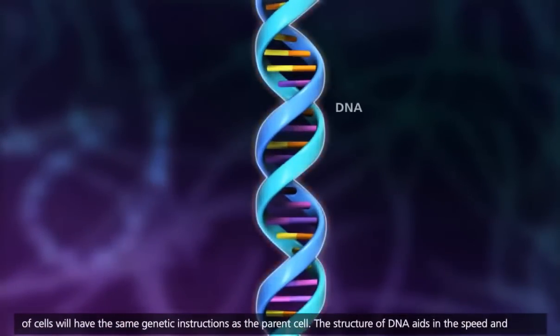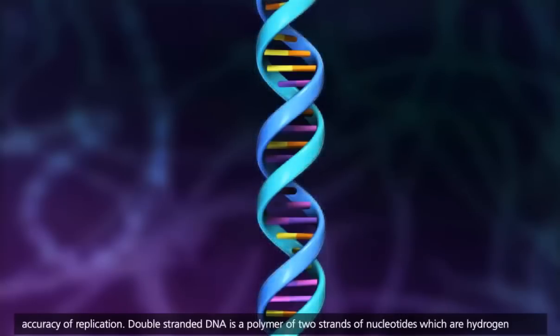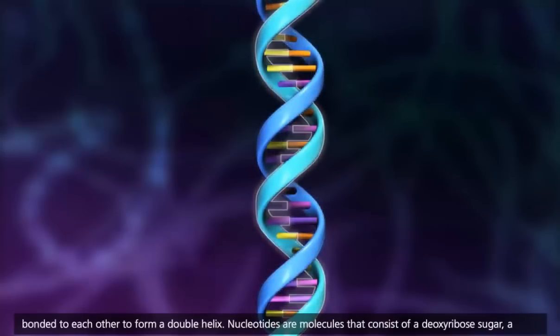The structure of DNA aids in the speed and accuracy of replication. Double-stranded DNA is a polymer of two strands of nucleotides, which are hydrogen bonded to each other to form a double helix.